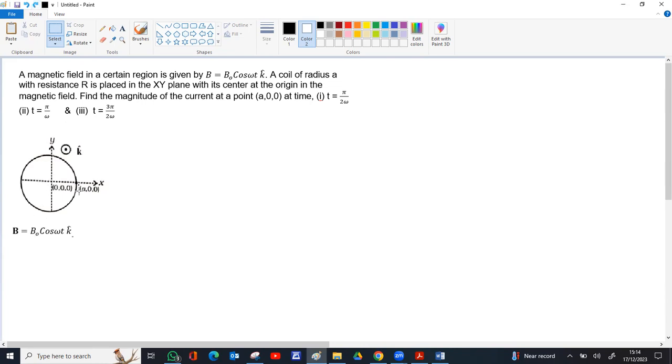So magnetic field is given as B₀ cos ωt k cap. The area of the coil is πr², that is out of the paper k cap. Now the magnetic flux is B dot A, vector B dot vector A. K dot K becomes 1. Then it will be just B₀ cos ωt into πr². So πr² B₀ cos ωt will be the flux.